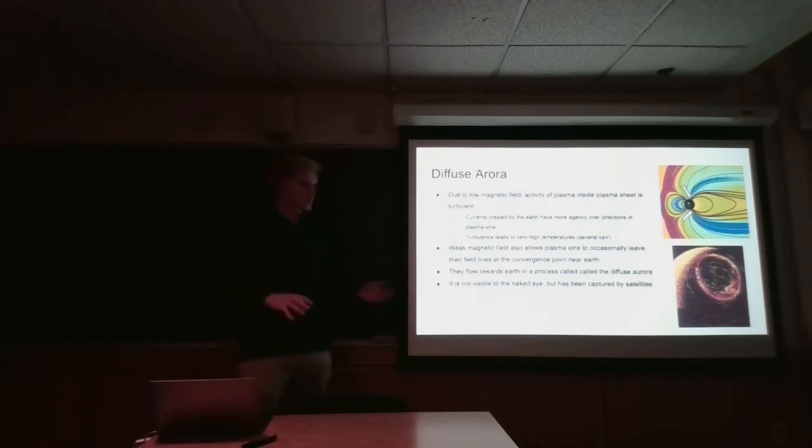The other magnetic fields and currents that surround the Earth have more agency over the ions in the plasma. And this turbulence, among other reasons, causes very high temperatures in that plasma sheet, unlike the lobes, which tend to not have this.